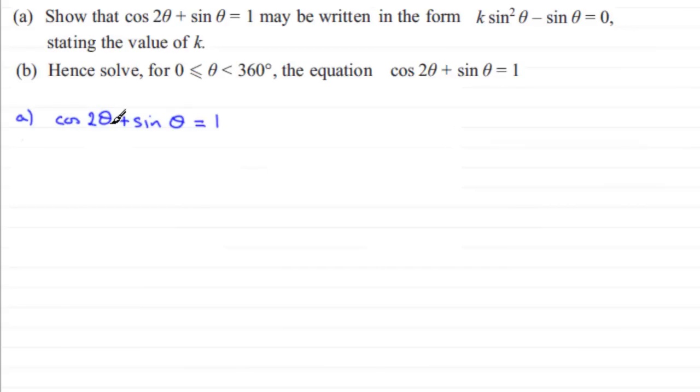Now the cosine of 2θ is exactly the same as 1 - 2 sin²θ. You should be familiar with this particular identity. Often see it as cos 2A = 1 - 2 sin²A. So then we've got the next term here plus sin θ, and that equals 1.